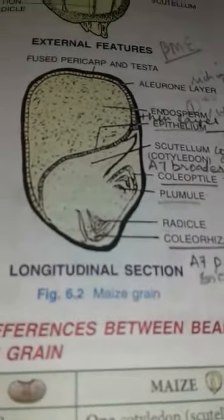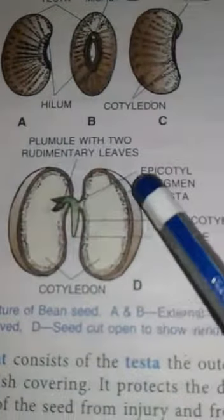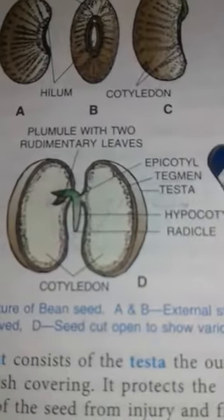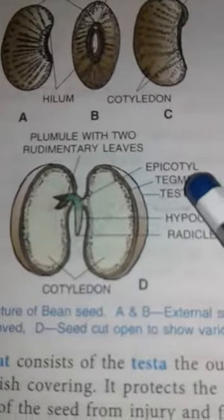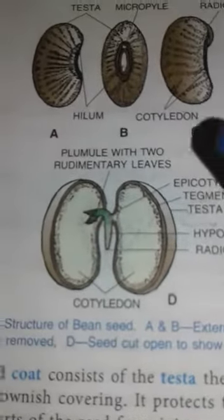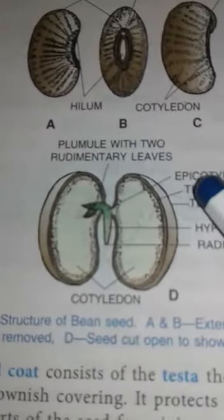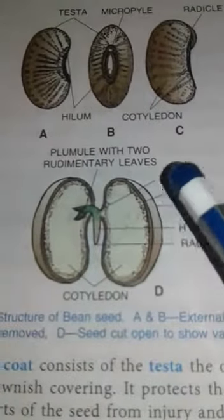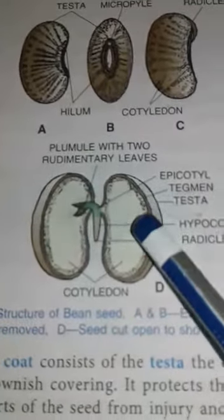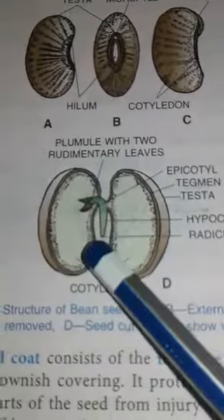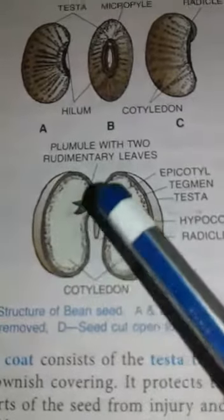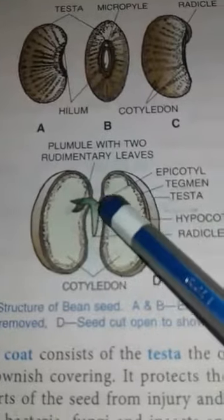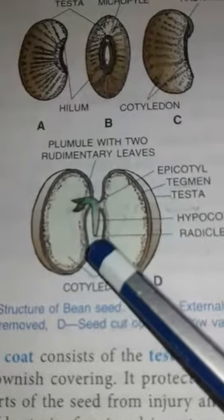Ex-albuminous or non-endospermic seeds, as the name suggests, have no endosperm present. In such seeds, the cotyledons store food themselves — they become thick and fleshy and provide nourishment during germination to the developing embryo. An example is bean.